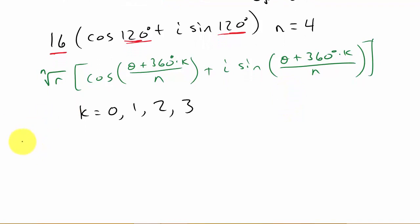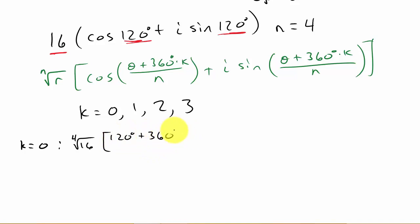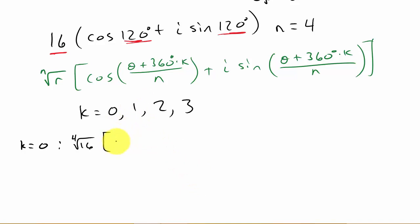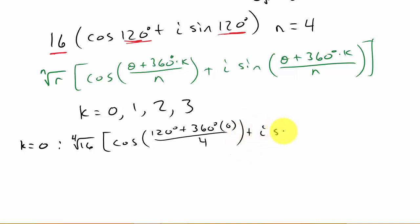All we do now is evaluate this for k equals 0, k equals 1, 2, and 3. So when k is equal to 0, we just plug everything in. That is the fourth root of 16 times the cosine of (120 plus 360 times 0 over 4), plus i times the sine of (120 plus 360 times 0 over 4).